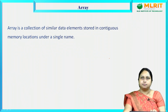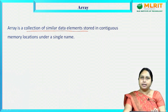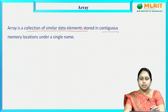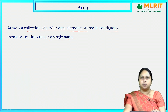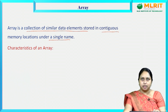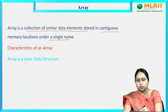Now let us look into what is an array. An array is a collection of similar data items or elements stored in contiguous memory locations under a single name. Before seeing the representation of an array, let us see its characteristics. The first characteristic is that an array is a static data structure.